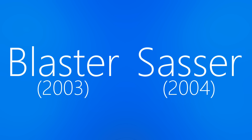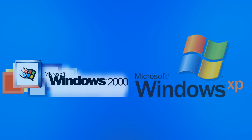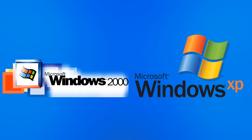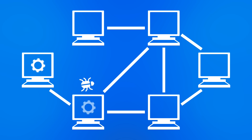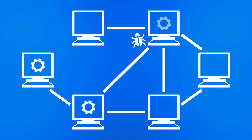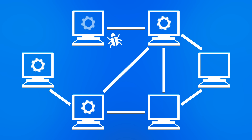Released less than a year apart from each other, these worms both made use of exploits within Windows XP to spread themselves without any human intervention. This made them not only easy to catch, but also very hard to isolate, since they would continue to automatically spread until manually removed.